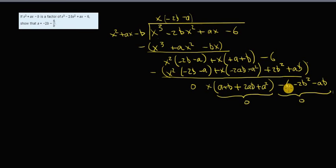This particular side here, the constant has a 6 in it. So I'm going to choose to work with this. So -6 - 2b² - ab = 0.